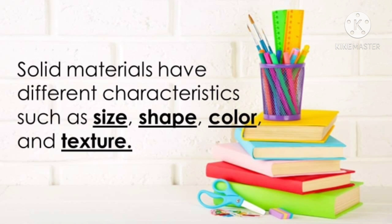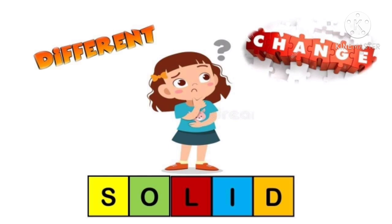It says here that solids differ in characteristics. Meron silang pagkakaiba-iba, depende sa material or sa solid object. They can differ in size, or sukat; the shape, yung kanilang hugis; the color, or yung kulay; and of course, even their texture varies. We have different types of texture: soft, hard, smooth, and rough. But the question is, why do solids become different from each other? Bakit ba kinakailangang magkaiba-iba pa ang mga solids from one another?